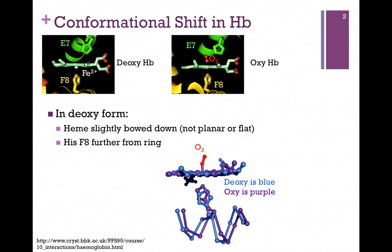If we look at the deoxy form on the left, we see that the iron atom is not within the plane of the ring — it's slightly below the ring, slightly bowed. Remember that histidine F8 is always in direct contact with that iron atom. However, in this case without oxygen present, that histidine E7 residue is too far away to make any contact. At the bottom of the screen we see the deoxy form in blue and the oxy form in purple, and in the deoxy form that histidine F8 is further from the ring.